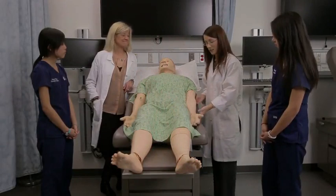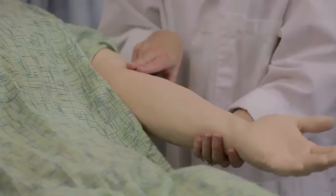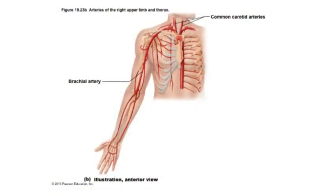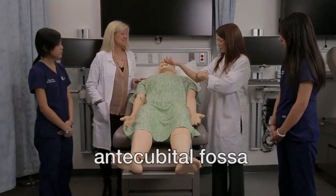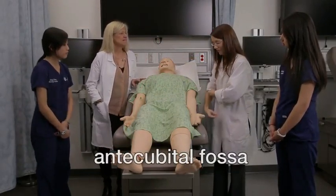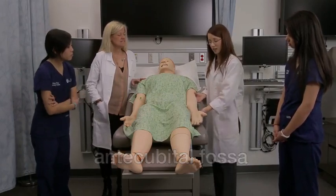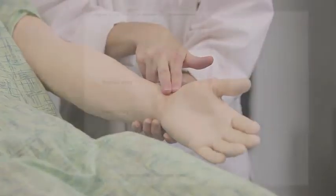The other places that healthcare providers commonly check are the brachial artery, here at the antecubital fossa — that's where the arm bends at the elbow, right here in this area. The other place on the arm that the pulse is commonly checked is the radial pulse here at the wrist.